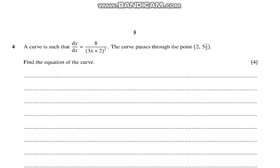So resuming the video, question number 4 says that a curve is such that dy/dx equals 8 over (3x + 2) whole square. The curve passes through the point (2, 17/3). Find the equation of the curve.